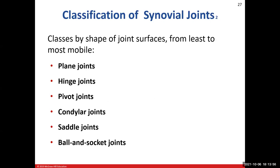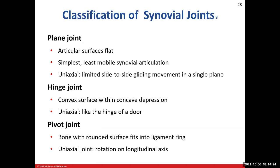Classifying synovial joints by shape: plane joints are the least mobile, and as we go down the list mobility increases, with ball-and-socket joints being the most mobile. A plane joint has flat articular surfaces — like the sacroiliac joint. Movement is limited to side-to-side or back-and-forth gliding in a single plane — uniaxial.